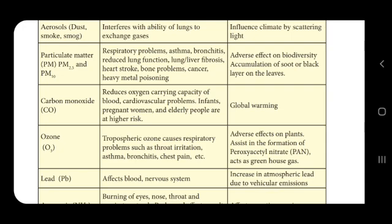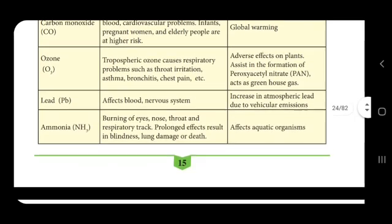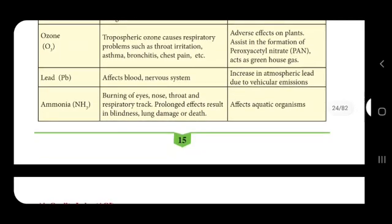Tropospheric ozone (O3) causes respiratory problems such as throat irritation, asthma, bronchitis, and chest pain. Although the ozone layer is very helpful for human beings at the upper atmosphere, when ozone descends to lower pollution levels it becomes a very toxic gas causing severe respiratory problems, and it also has adverse effects on plants and contributes to PAN formation.